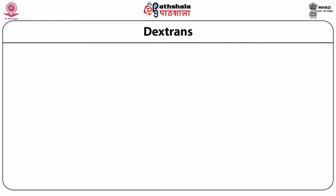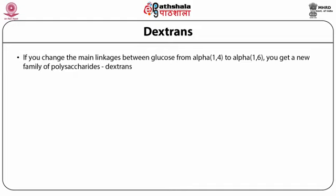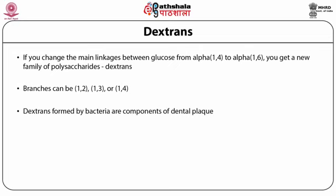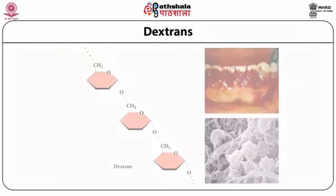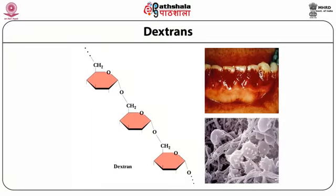Dextran is another class of complex carbohydrate. If the main linkage between glucose units is changed from alpha-1,4 to alpha-1,6, a new family of polysaccharide called dextran is obtained. Branches can be 1,2; 1,3; or 1,4 linkages. Dextrans formed by bacteria are components of dental plaque. Cross-linked dextrans are used as Sephadex gels in column chromatography, and these gels can be up to 98 percent water.